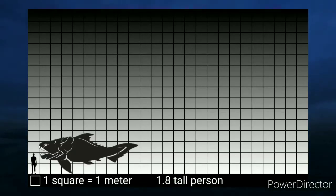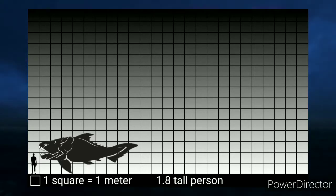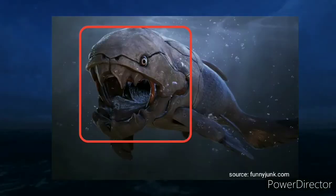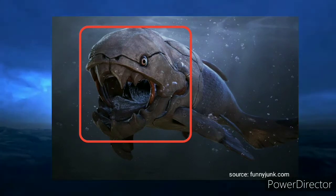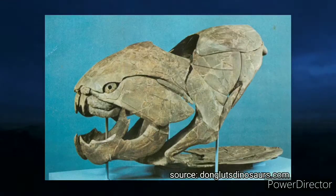Regarding its size, Dunkleosteus terrelli had approximately 8.79 meters, equivalent to 28.8 feet in length, and weighed four tons, equivalent to 4.4 short tons. The head of Dunkleosteus is disproportionate compared to the rest of its body.